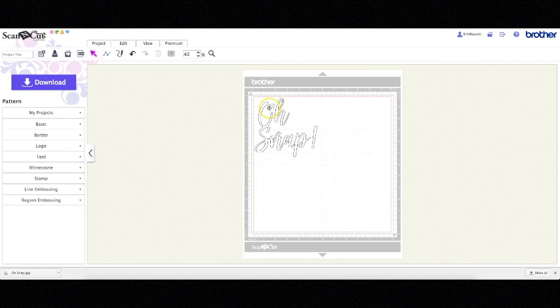So you can see it traced my words exactly how I created them and now I'm going to select the extra little centers of these letters and hit delete on my keyboard to get rid of them.